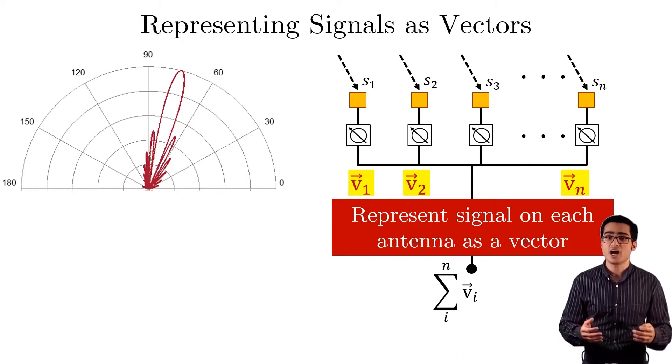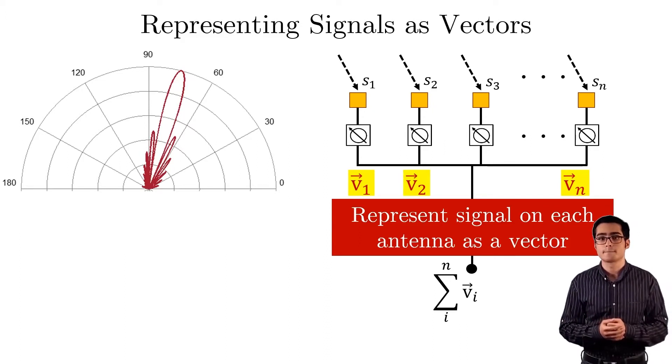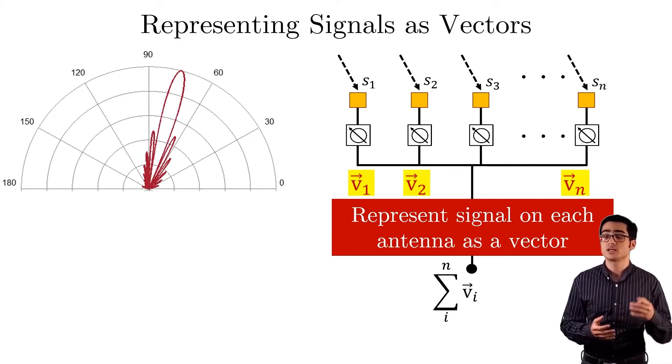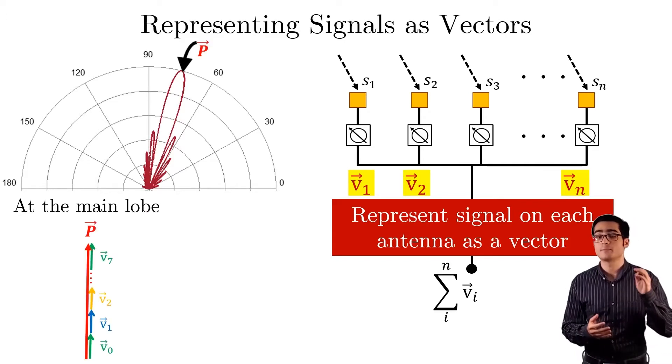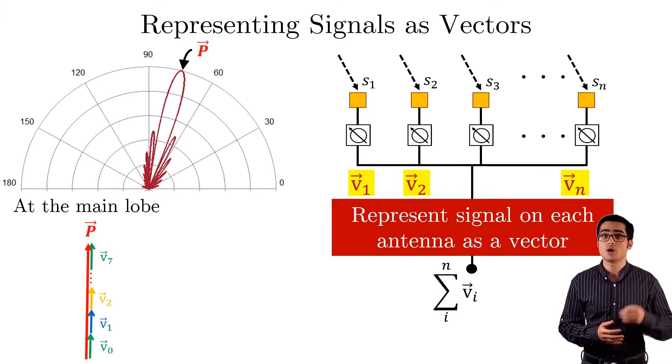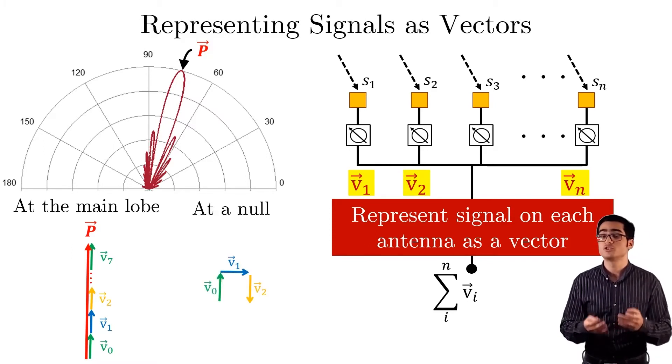The vectors vi change based on the direction of the signal. For instance, for a beam pattern like this, vi's are all aligned and add up to the received vector p at the main lobe. However, at another direction where there is a null, vi's add up to the zero vector.